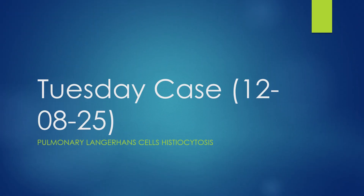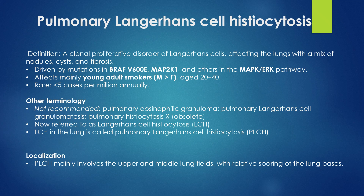This week's Tuesday diagnosis drop case was pulmonary Langerhans cell histiocytosis. It's a clonal proliferative disorder of Langerhans cells affecting the lungs, with a mixture of nodules, cysts, and fibrosis. It is driven by mutation in the MAPK pathway, with the most common being BRAF V600E, followed by MAP2K1.